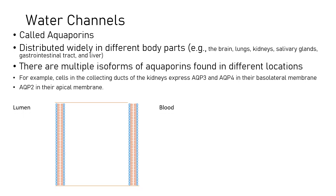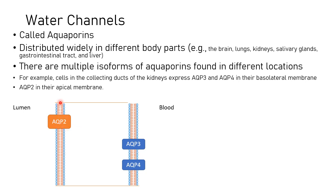To explain this further: you have the luminal part, which is the tube of the collecting duct, then you have the epithelial cell of the collecting duct, and the blood vessel on the other side. On the luminal or apical part you have aquaporin-2, which allows water to enter into the cell. Water then exits the cell via aquaporin-3 and aquaporin-4 on the basolateral side into the blood.